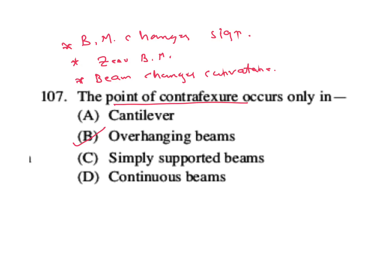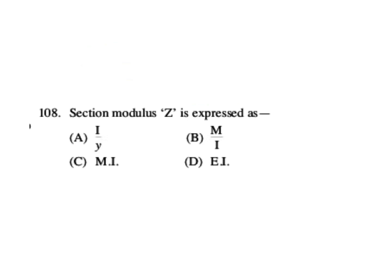Question is: section modulus Z is expressed as - from our bending formula, sigma_b by y equal to M by I equal to E by R. So here, sigma_b equal to M by I into y, or we can write M by I by y. This I by y is your section modulus Z, or we can write it as M by Z to resist sigma_b.